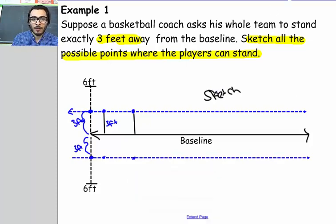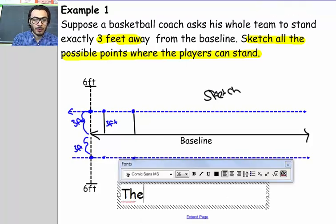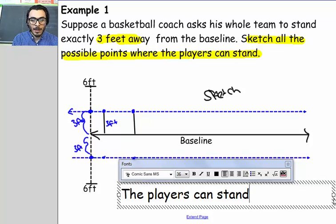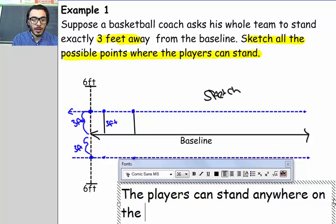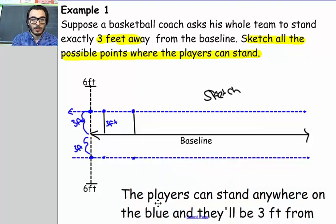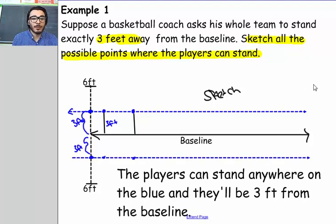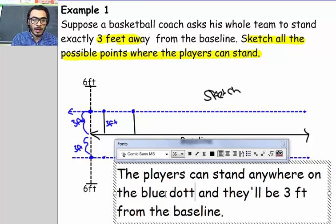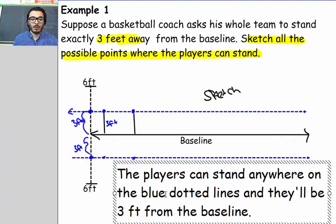So what I'm going to write is: the players can stand anywhere on the blue dotted lines and they'll be 3 feet from the baseline. That's the answer. It says sketch all the possible points — they've got to be 3 feet away. Anywhere on those blue dotted lines, you'll be 3 feet away.